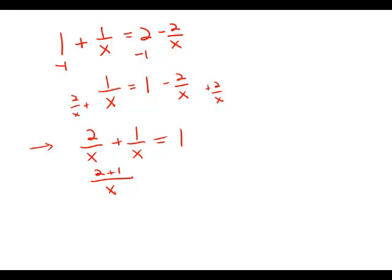So 2 over x plus 1 over x equals 2 plus 1 over x equals 3 over x, which equals 1.